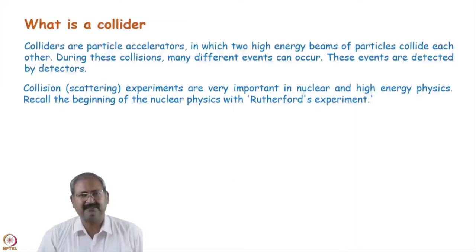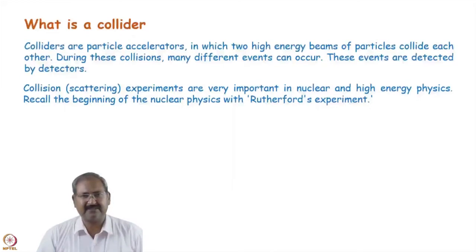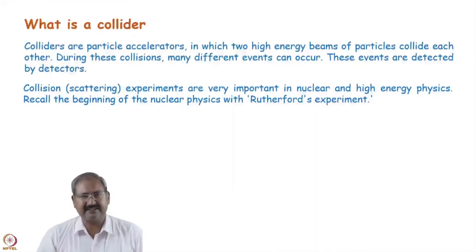Presently all colliders except one are based on the synchrotron. The very first collider was linear accelerator-based. The accelerator journey started with collision experiments — recall Rutherford's experiment, where he bombarded alpha particles on a gold foil. From this he deduced the nuclear model of the atom, and it was recognized that higher-energy particles could split the nucleus. Inspired by this, Cockroft and Walton built the first DC accelerator and used it to split lithium.